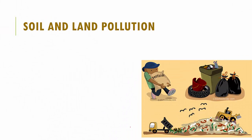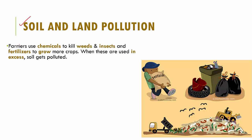We have soil and land pollution, which is equally as bad as water and air pollution. Farmers use chemicals to kill weeds as well as insects, and they use fertilizers to grow more crops. When these chemicals — that is the fertilizers and pesticides — are used in excess, they lead to soil pollution.